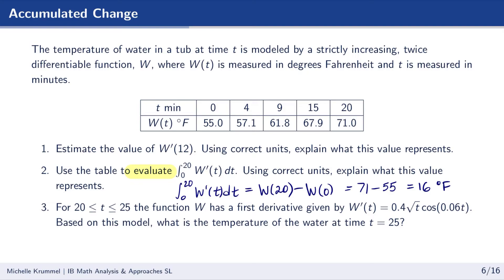That is our exact value of this definite integral: 16 degrees Fahrenheit. A common mistake is to say this represents the temperature of the water — it doesn't. It's the change in temperature over this time interval. From t equals 0 minutes to t equals 20 minutes, the temperature has increased by 16 degrees Fahrenheit, because this is a positive change.